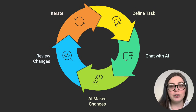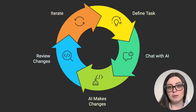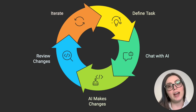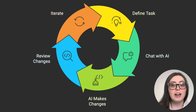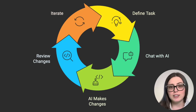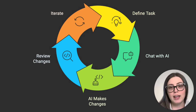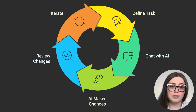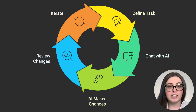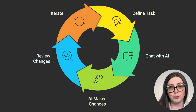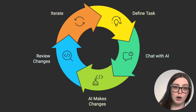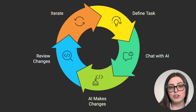Once we have the initial prototype, we will want to make changes and improvements. This is where the Gemini in Firebase chat feature comes in really handy. Instead of diving into code, we chat with Gemini directly within Firebase Studio. We can ask it to add user authentication, change the layout, or add a feature, and Gemini understands our specific code base. It's not giving generic advice — it knows exactly what's in our app and how to make targeted changes. We can iterate without having to dig through the code ourselves.